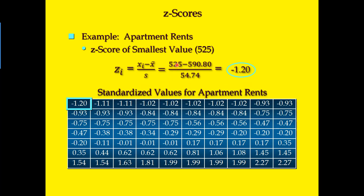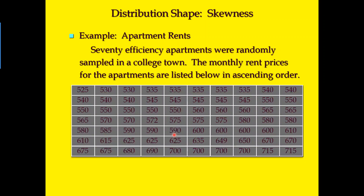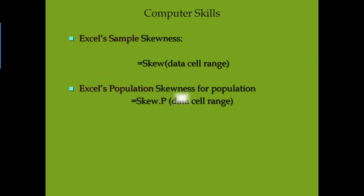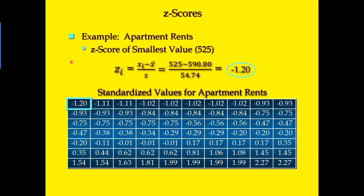The first observation in the data was $525. Using the z-score formula to calculate it, we get negative 1.2. We do the same thing for the rest of the observations. The table I'm showing here is the standardized values. You can see the original data — the first observation is 525 — and after we apply the standardized formula it converts to a z-score. This is the z-score table.